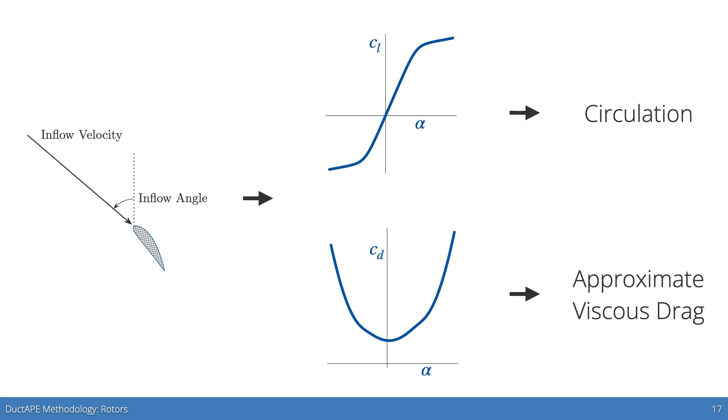We also distribute source panels along the lifting line in order to approximate viscous drag effects of the rotor, and we obtain the source strength distributions from the airfoil polar lookup tables as well.